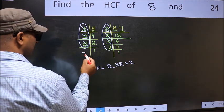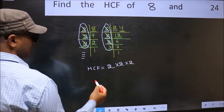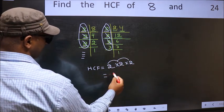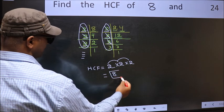No more numbers have been left out. So our HCF is 2 times 2 is 4 times 2 is 8. 8 is our HCF.